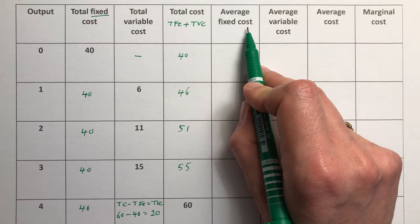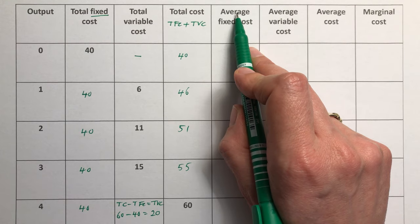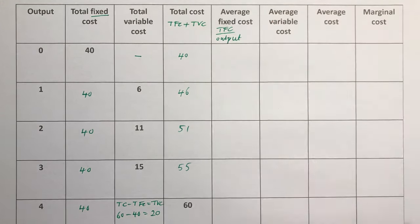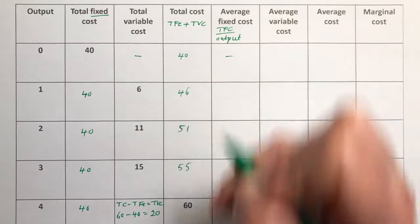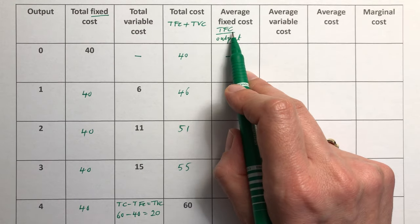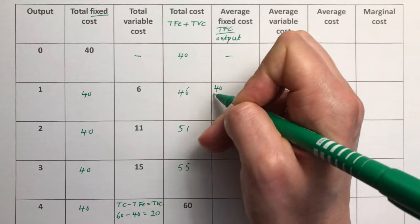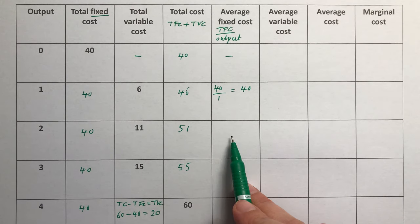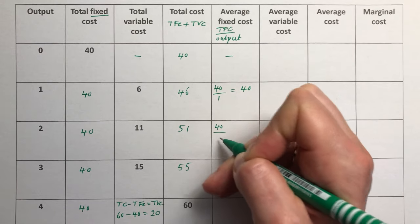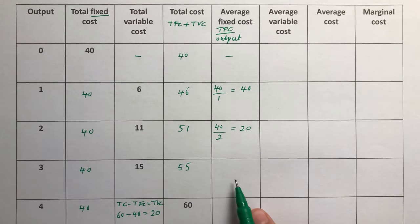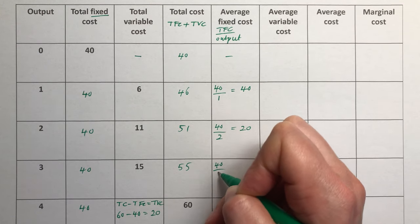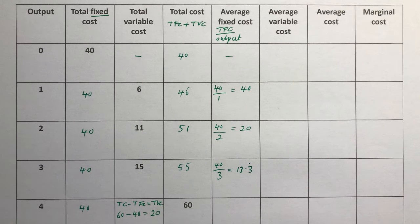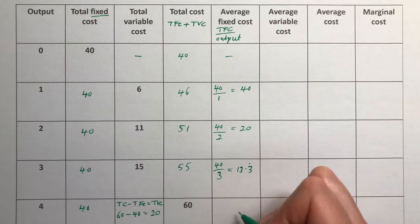The next one is average fixed cost. For any average, you simply divide by the amount of output — so this is total fixed costs divided by output. When there's no output we put a dash. With one unit: 40 divided by 1 is 40. Two units: 40 divided by 2 is 20. Three units: 40 divided by 3 is 13.3 recurring. Four units: 40 divided by 4 is 10.